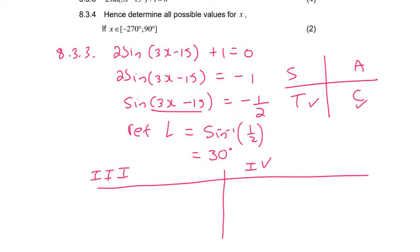Now we can start, so we say 3x minus 15, and then 3x minus 15 for quadrant 4 as well. And then for quadrant 3, it starts with 180 plus. For quadrant 4, it starts with 360 minus, and then you put your reference angle.